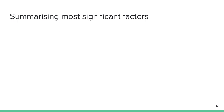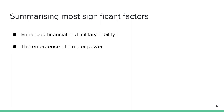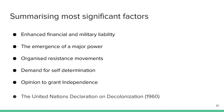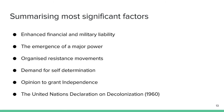The five most significant factors responsible for decolonization are: enhanced financial and military liability in the post-war period; the emergence of the United States as a major power in international politics, which consequently changed relations between the Western nations; organized resistance movements in the colonies and the increased demand for self-determination; opinion in Britain favoring the granting of independence to the colonies; and the United Nations declaration on decolonization of 1960 and American endorsement of it.